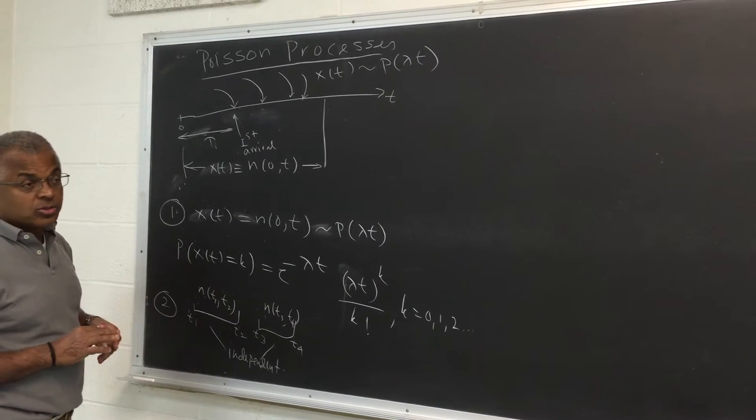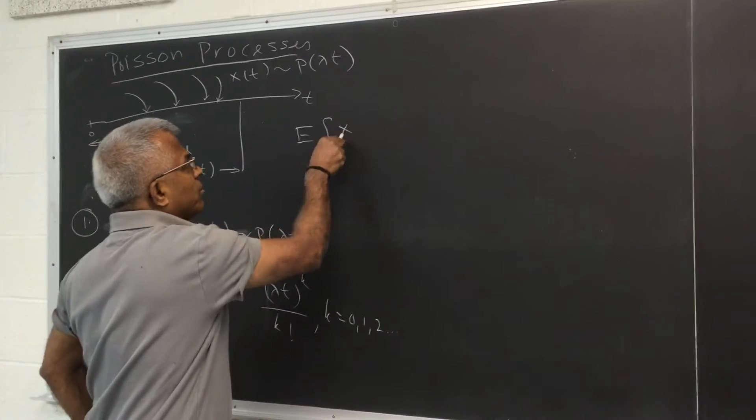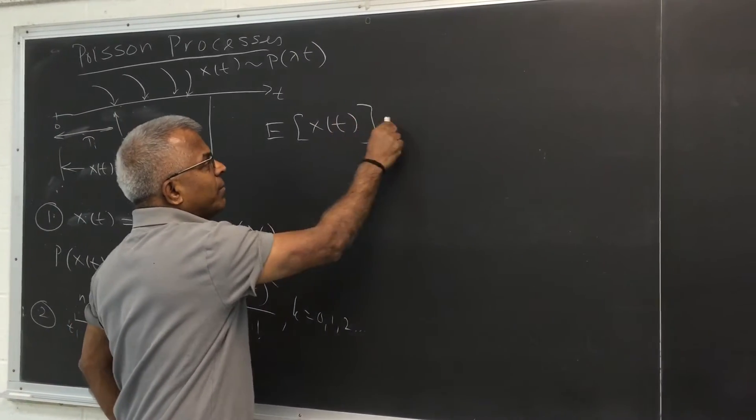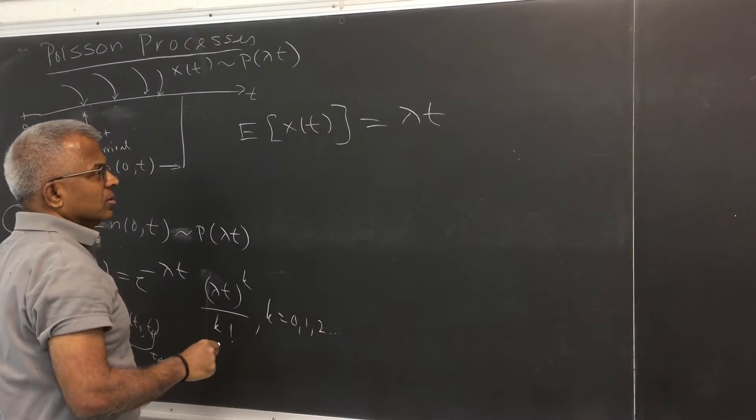So the immediate question is what is its mean and variance. Expected value of x of t, remember for any t this is behaving like a Poisson random variable. So it's lambda t.